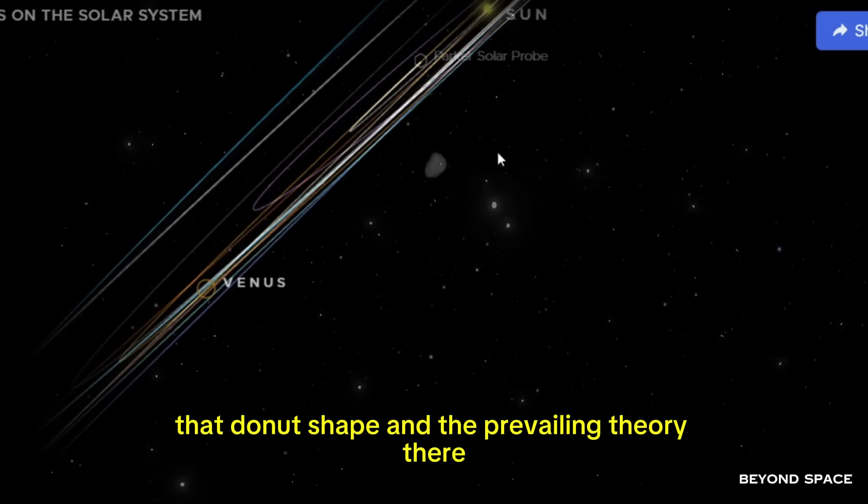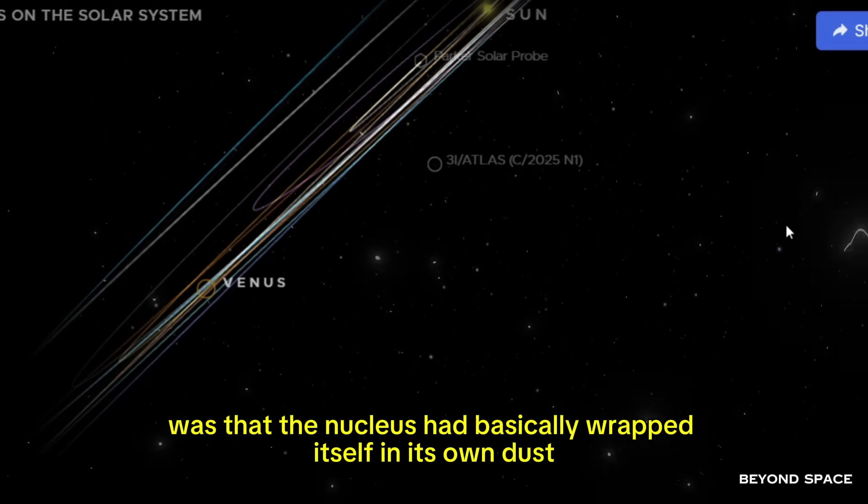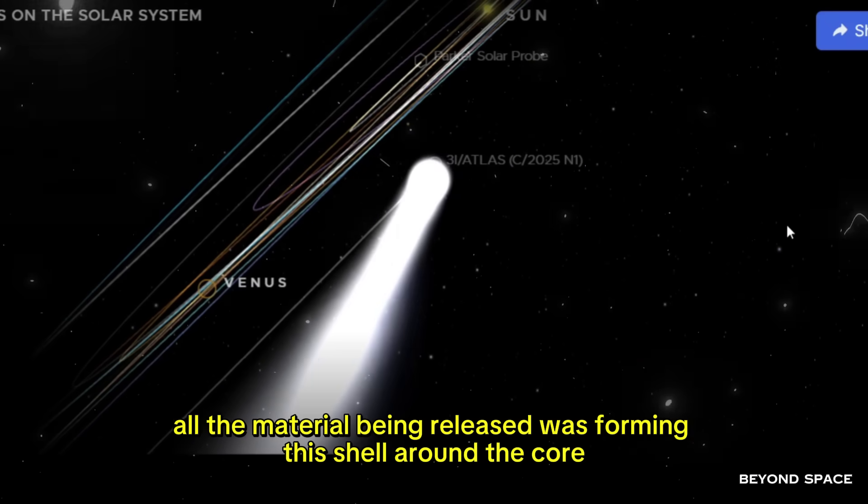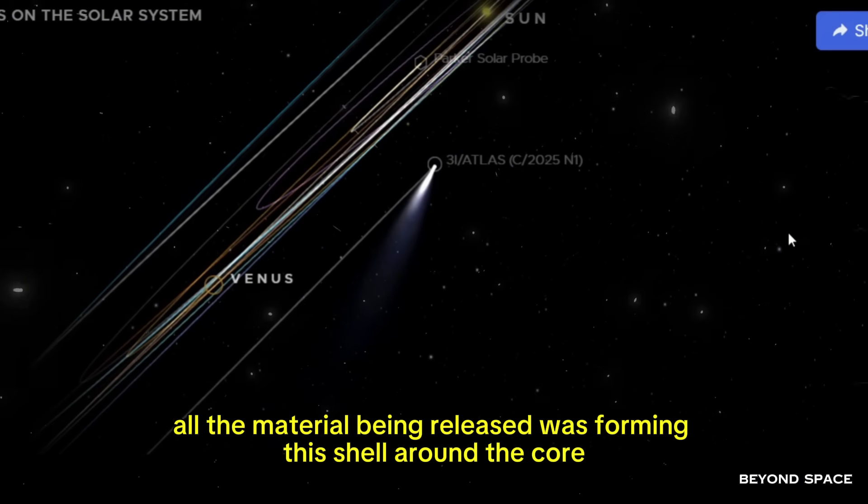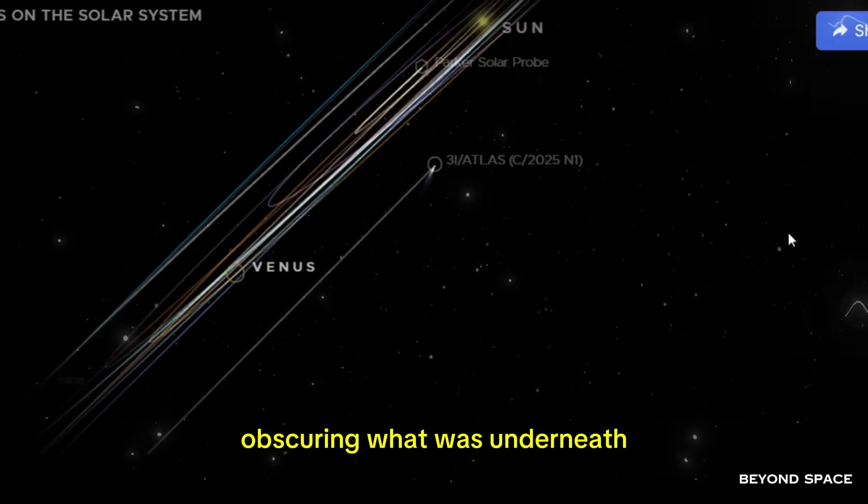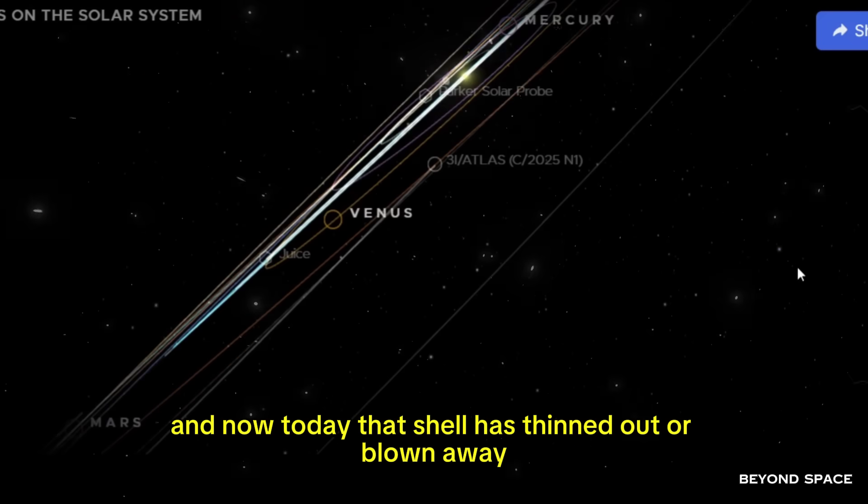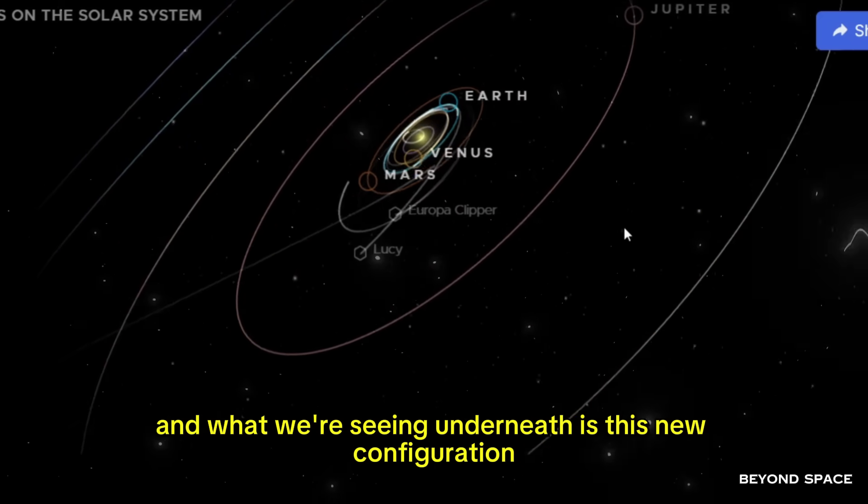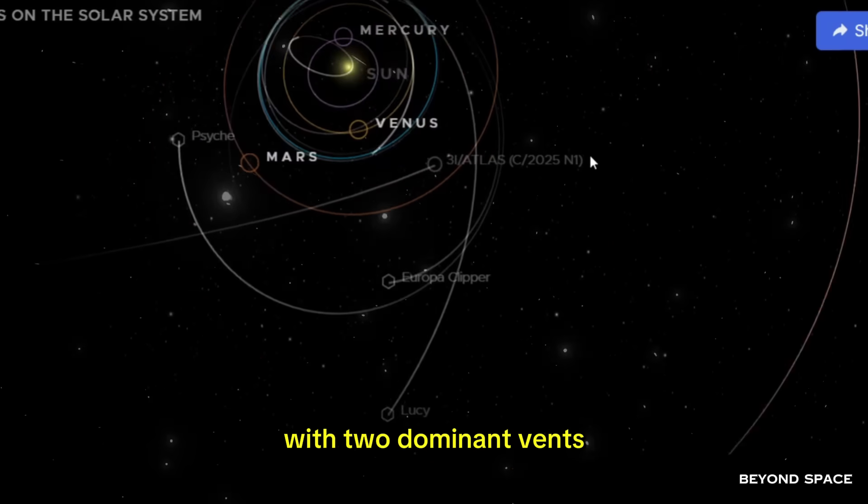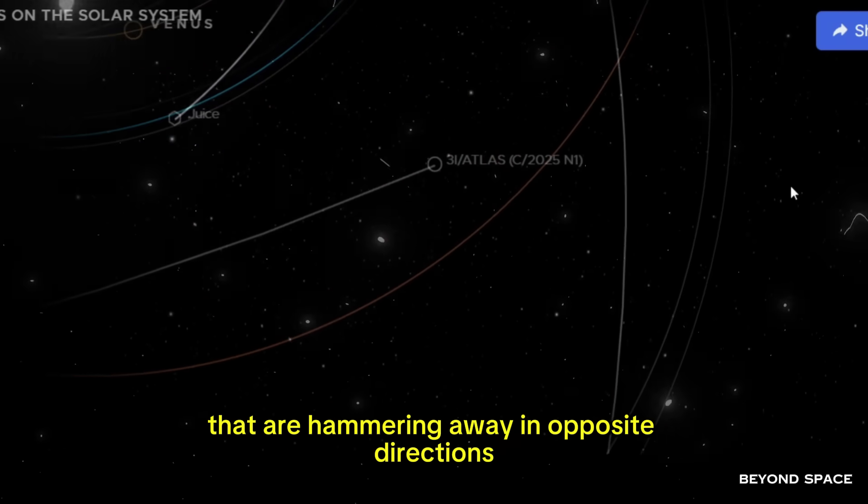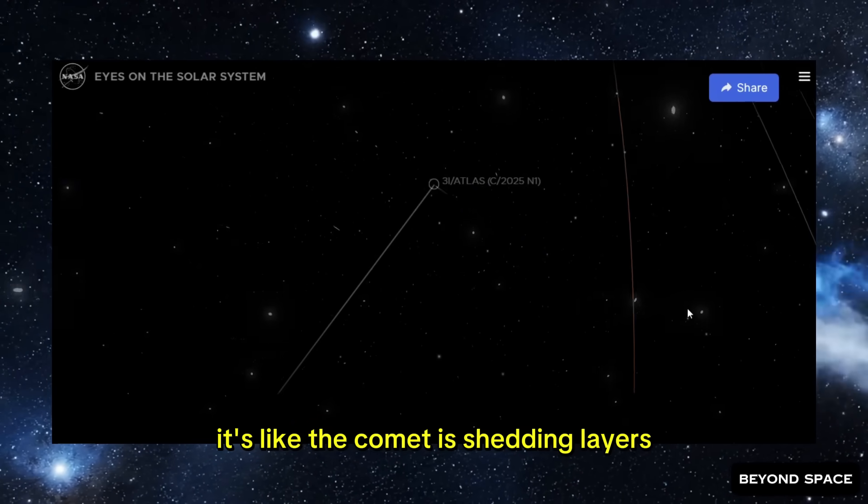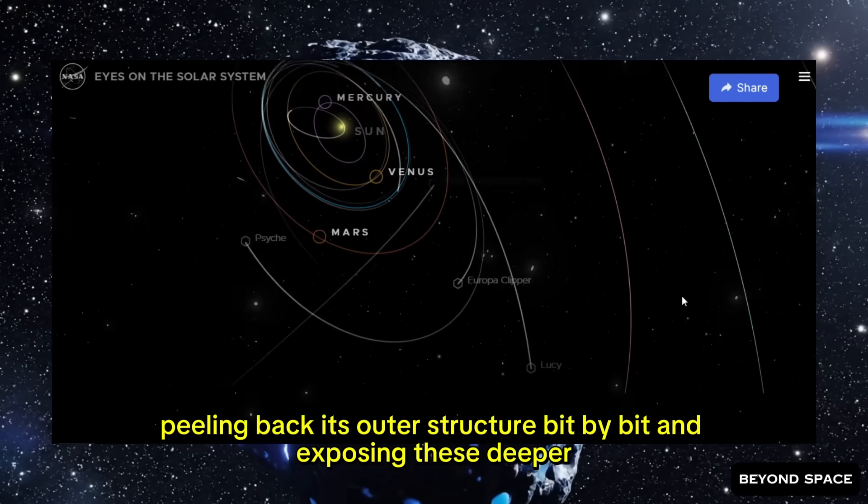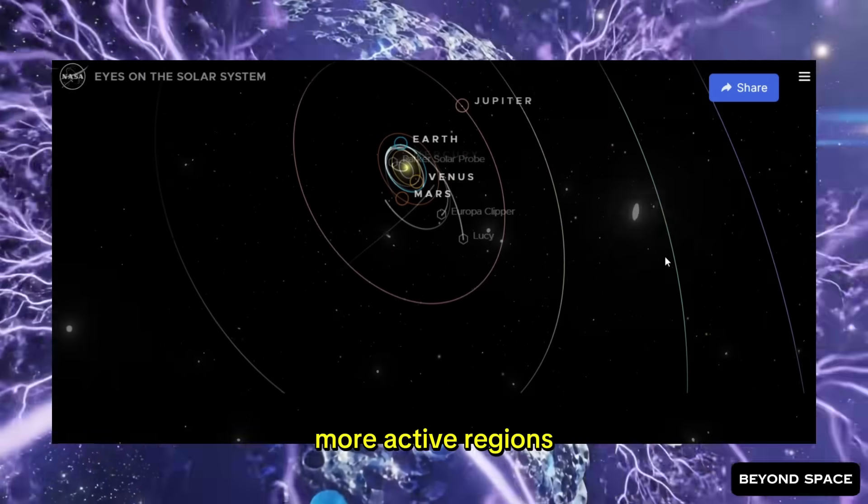Then we got that hollow coma structure. That donut shape. And the prevailing theory there was that the nucleus had basically wrapped itself in its own dust. All the material being released was forming this shell around the core, obscuring what was underneath. And now, today, that shell has thinned out or blown away. And what we're seeing underneath is this new configuration with two dominant vents that are hammering away in opposite directions. It's like the comet is shedding layers, peeling back its outer structure bit by bit and exposing these deeper, more active regions.